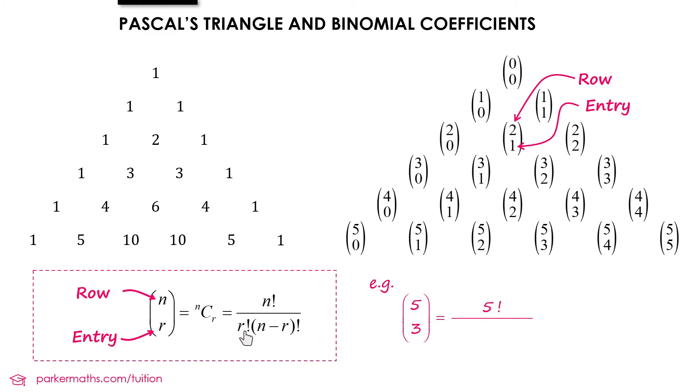And then we've got r factorial, which would be 3 factorial. And then n minus r would be 5 minus 3 factorial. Since 5 minus 3 is 2,